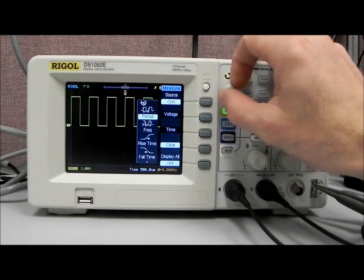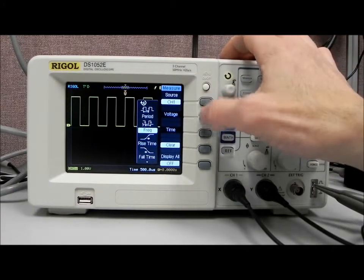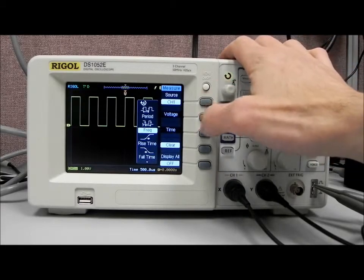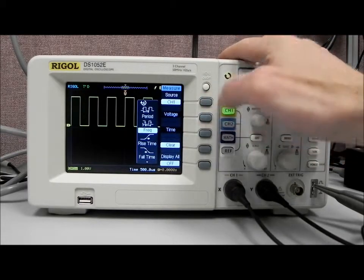But now let's go to time, and let's rotate down to frequency. Again, we can pick individual measurement types, both on the time and the voltage areas. But time, I'm going to select frequency.